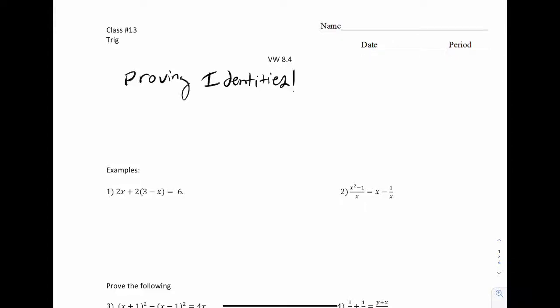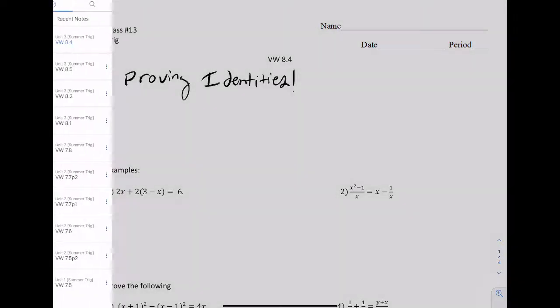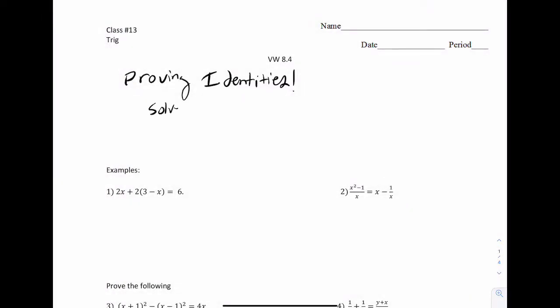Welcome to VW 8.4. Today we're going to talk about proving identities. So it's going to be a little bit different from what you've been doing. Normally you're accustomed to solving. So for example, this is what you've been doing. You solve for x, let's say like 2x plus 1 equals 0. You get x equals negative 1 half and you circle that. That's solving.